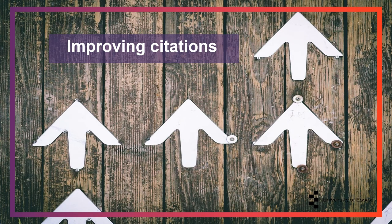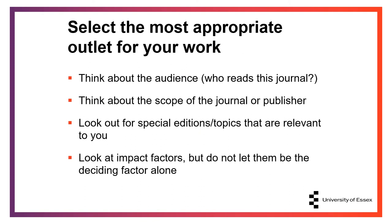Now we're going to look at how to improve your citations. An important first step is to choose the most appropriate outlet for your work. Think about the audience of the journal you're considering submitting your paper to — if the audience is similar to those who would be interested in your work, you will have a captive audience to get the ball rolling with citing your work. Think also about the scope of the journal. The closer the fit between your research and the journal's scope, the more likely the existing audience will be interested in your work and thus cite it. You can also look out for special editions or topics relevant to your research. When selecting a journal, you might want to look at the journal impact factor, which reflects the annual average number of citations to recent articles published in that journal. This can be useful, but making sure your research is a good fit for the journal is more important.